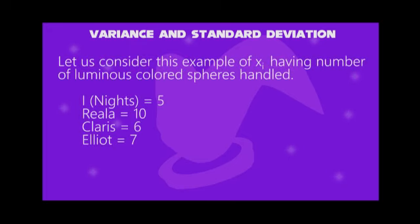Let us consider the sample variance Xi. Suppose we are 4 people: I, Rina, Clarice, and Elliot, have 5, 10, 6, and 7 luminous colored spheres.